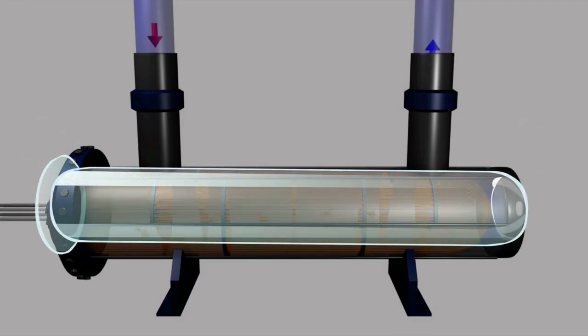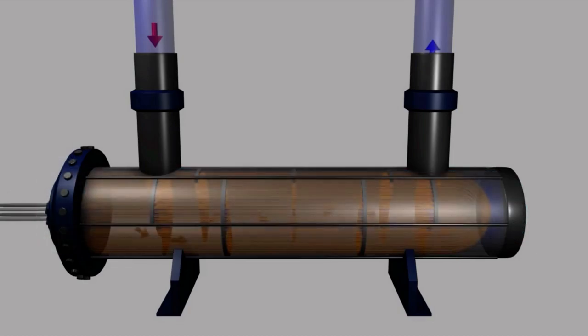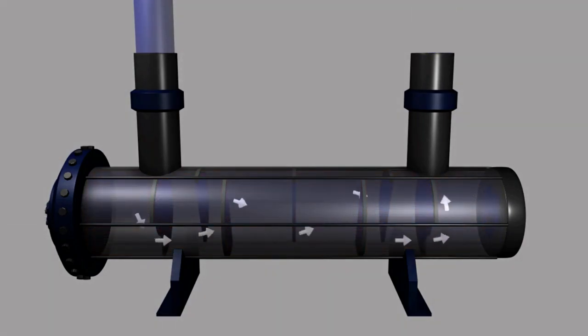The shell is a cylindrical vessel that provides housing for the tube bundle. The tube bundle consists of a series of tubes mounted inside the shell. The baffle plates are mounted inside the shell and direct the flow of fluid through the tube bundle.